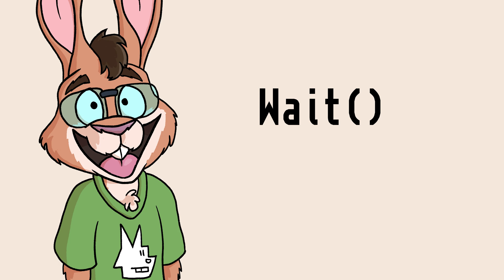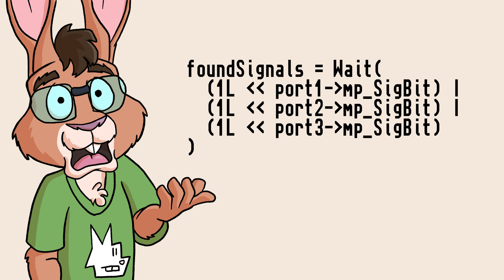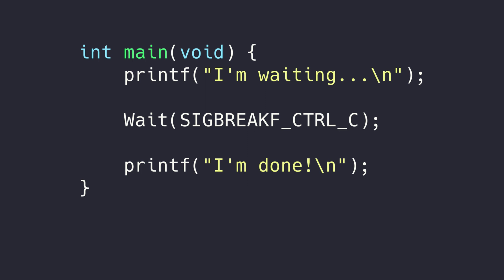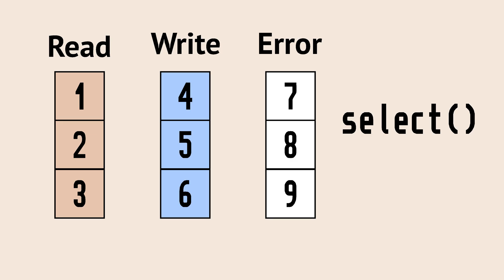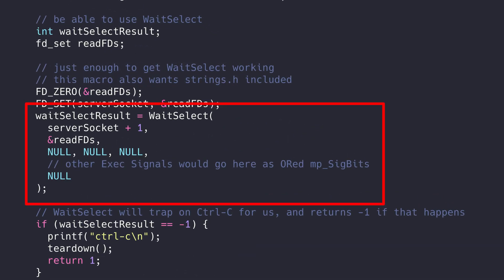Wait waits for a signal to be sent to our program. We have to specify what signals we want to wait on, and while we're waiting, our code will do absolutely nothing. This short snippet of code, when running in the console, will wait for us to hit Ctrl+C; once we do, the program will continue and then exit. Select takes lists of socket numbers and waits for those sockets to be ready for reading, writing, or if there's some sort of error. Once one or more of them are ready, those lists are modified and you look through what remains in the lists and act on them accordingly. WaitSelect combines the two, so we'll either stop waiting if a signal comes in or if a socket has become interesting.